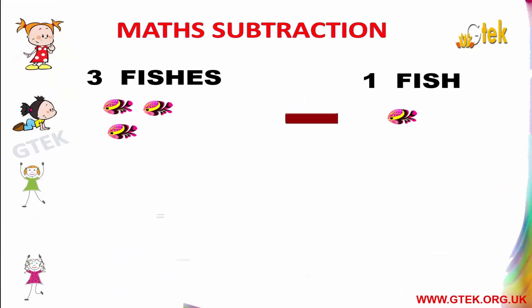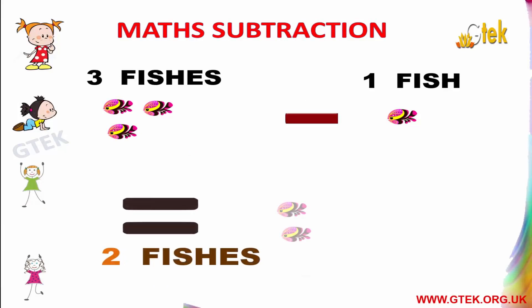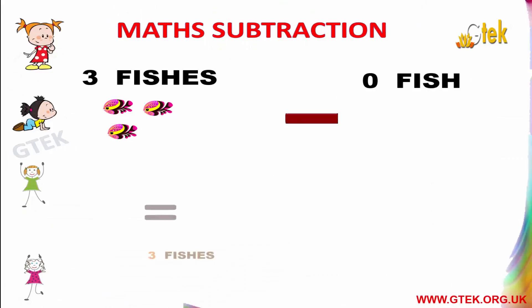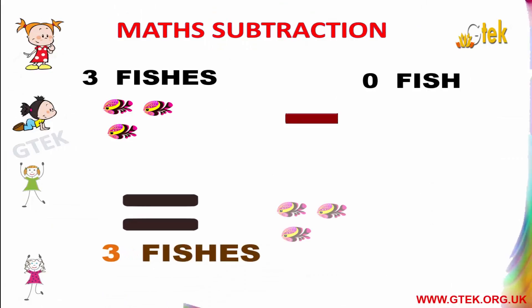3 fishes minus 1 fish equals 2 fishes. 3 fishes minus 0 fish equals 3 fishes.